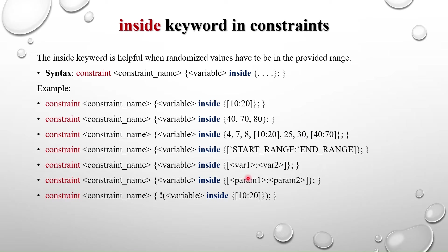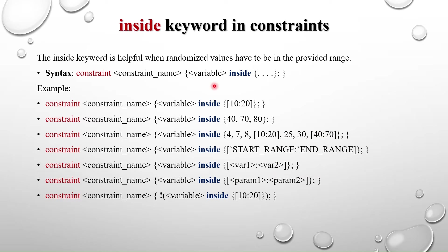When you don't want to generate values within a specified set, you can use the inverted inside keyword using the '!' (not) operator with the same syntax. This ensures the value will not be generated within the specified range — instead, values outside that range will be generated.